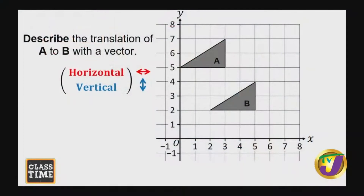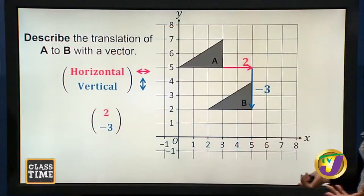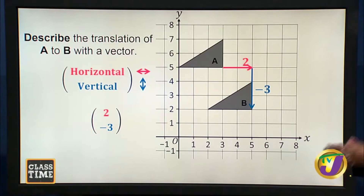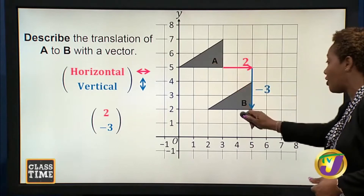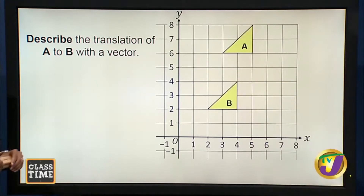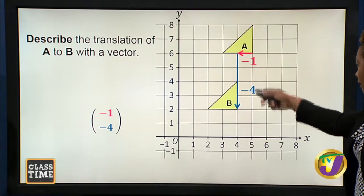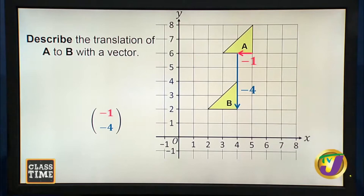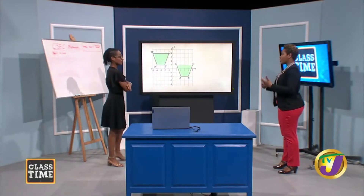From A to B: from this point, two to the right is a positive value, and three downwards is a negative value. Good job. And when trying to find the vector, you must use the same point on the object and the same corresponding point on the image. For this next one, both values are negative — moving to the left and downwards: one left and four downwards.